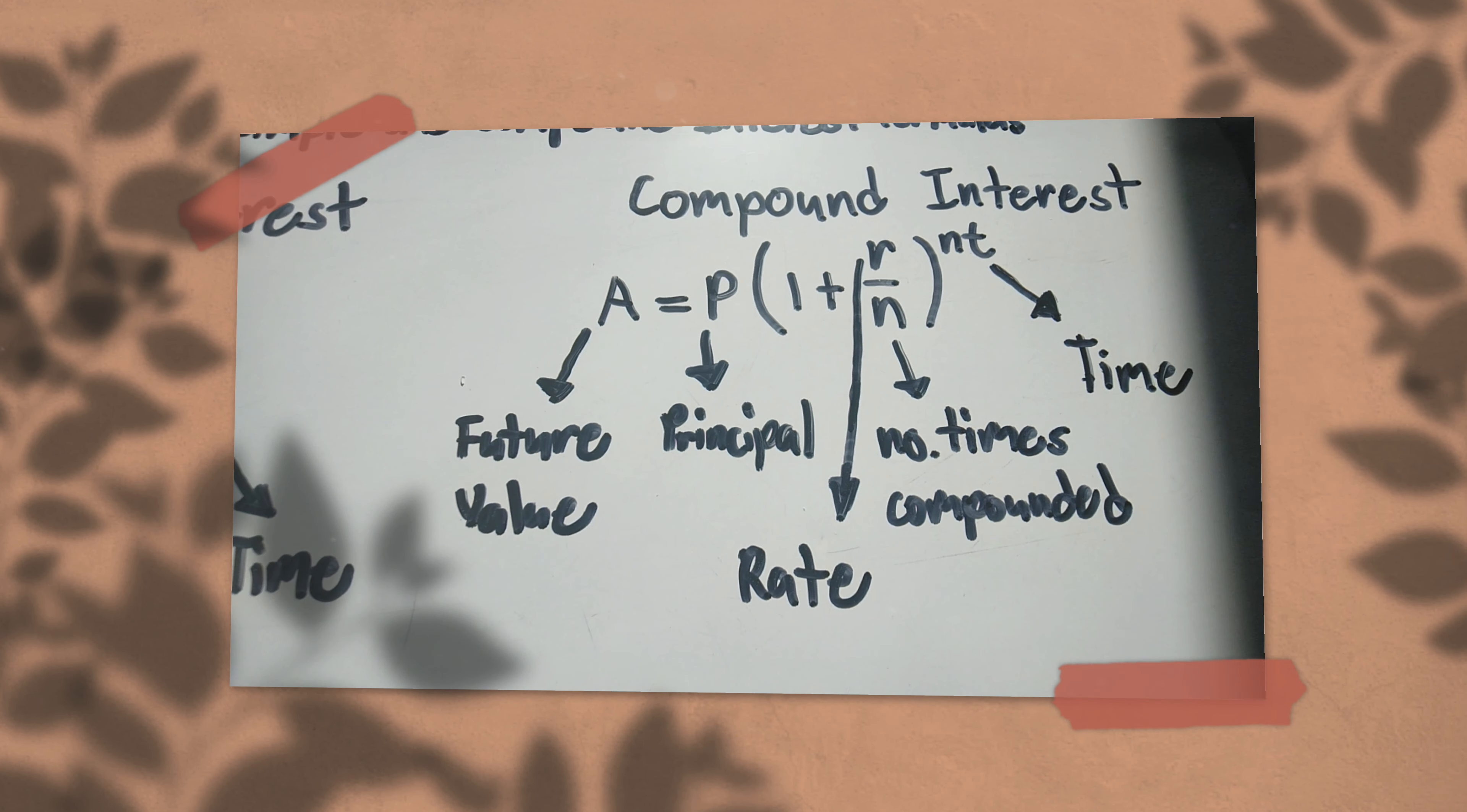So, 5,998 will be the interest in two years. And that is how to solve simple interest problems.